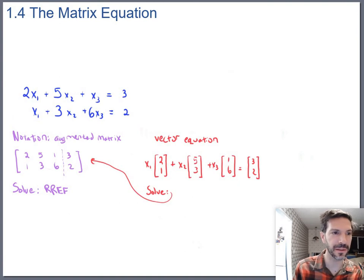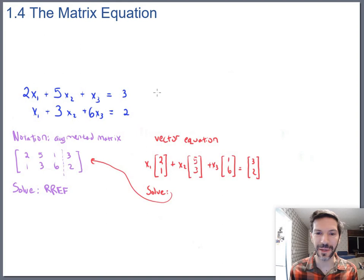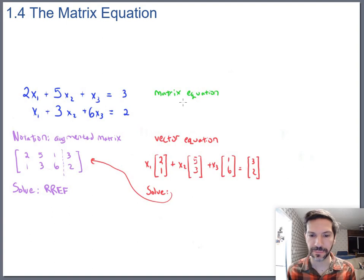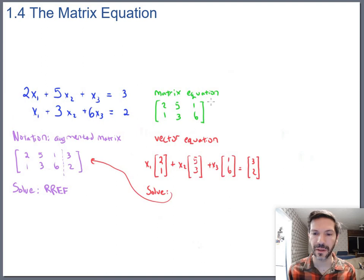Now let me introduce to you a third form—let's get a third color going here, how about this lovely shade of green—and we'll get the matrix equation form. This form is just a slightly more compact way of writing the other three, and you start by making a matrix out of the vectors from the previous forms. So you'd say 2, 1, 5, 3, 1, 6.